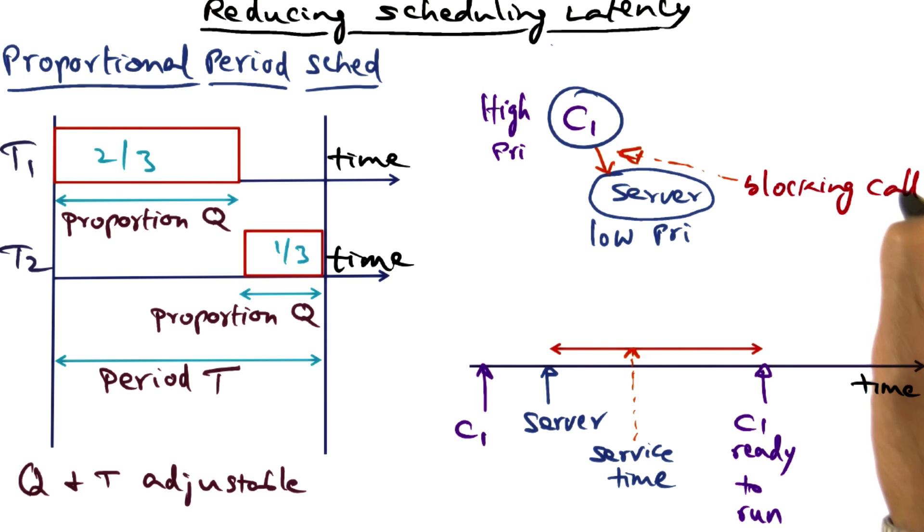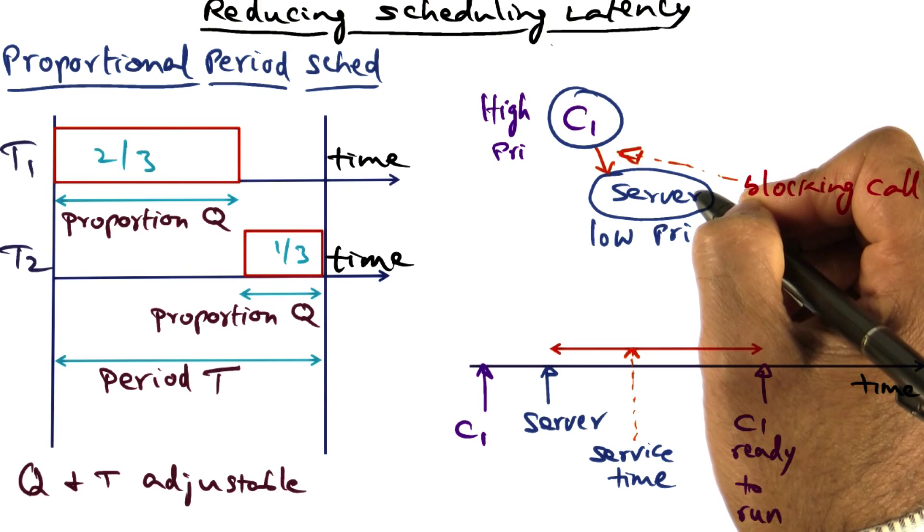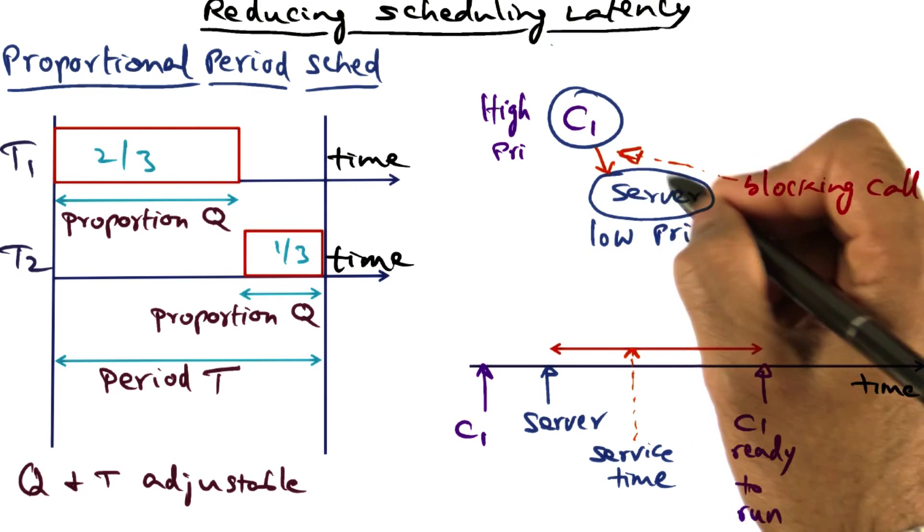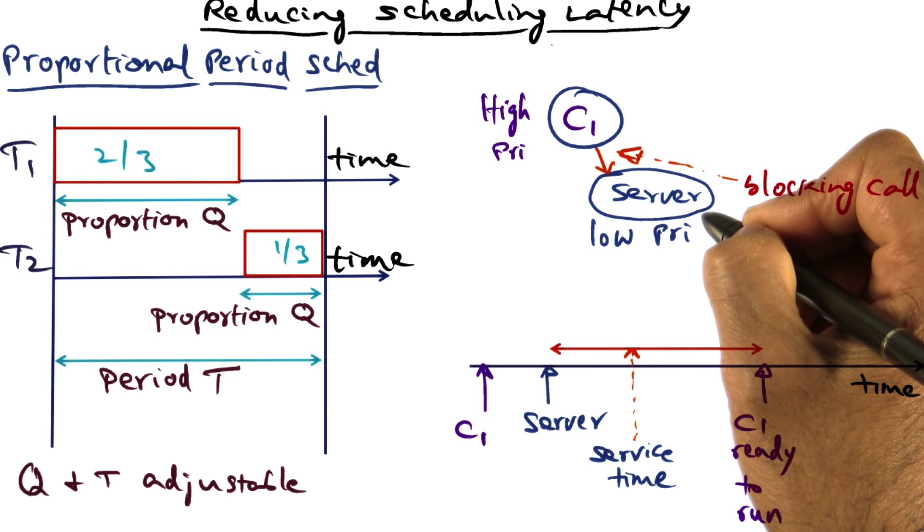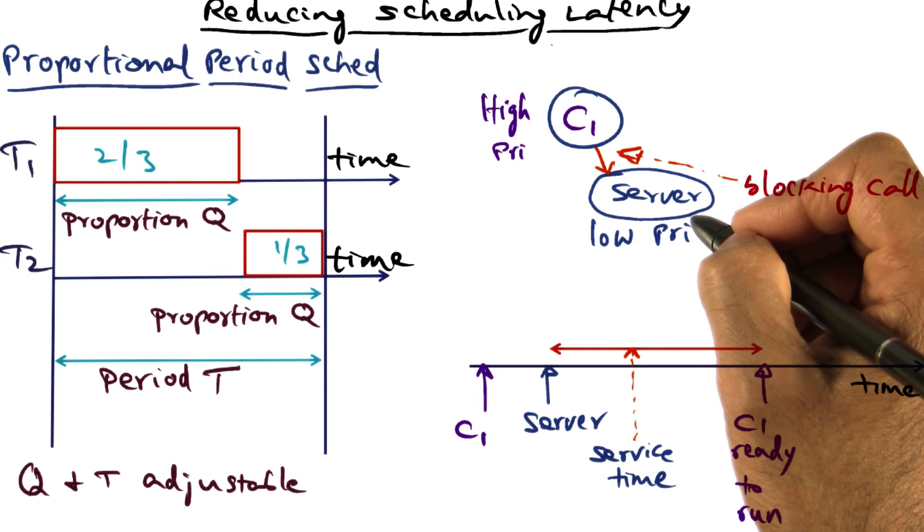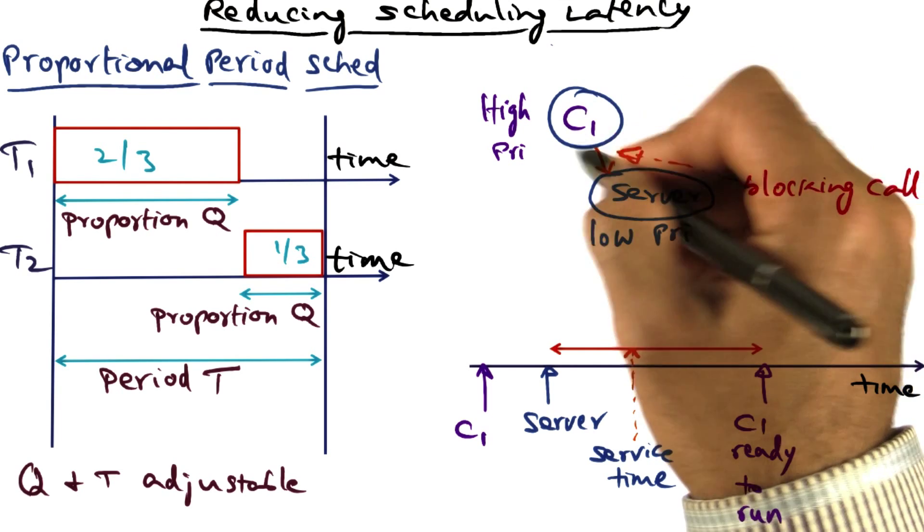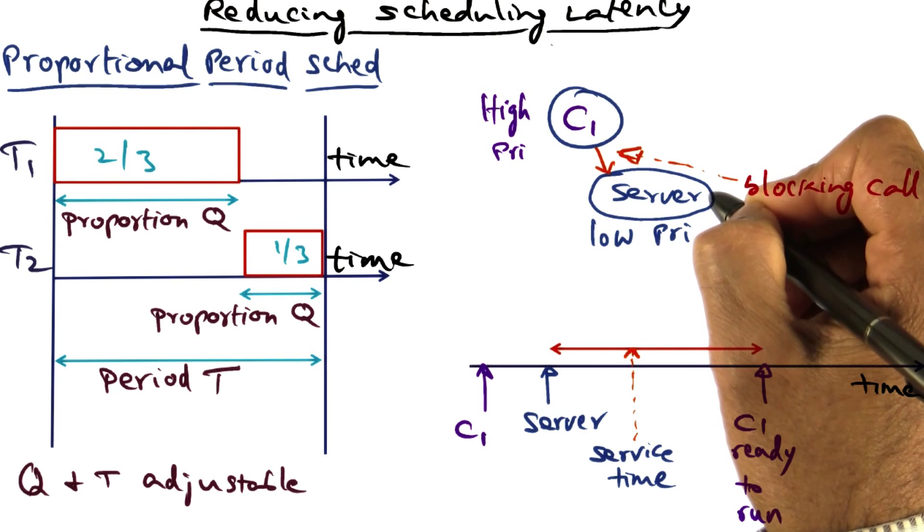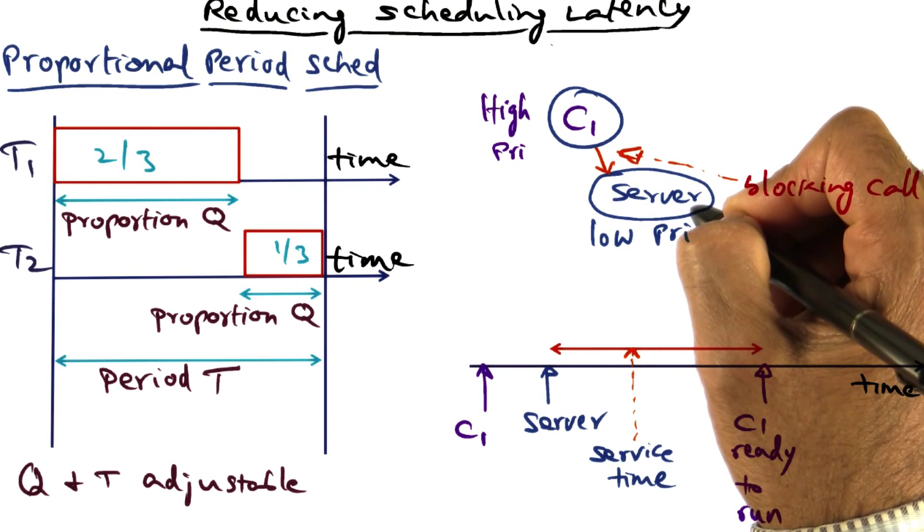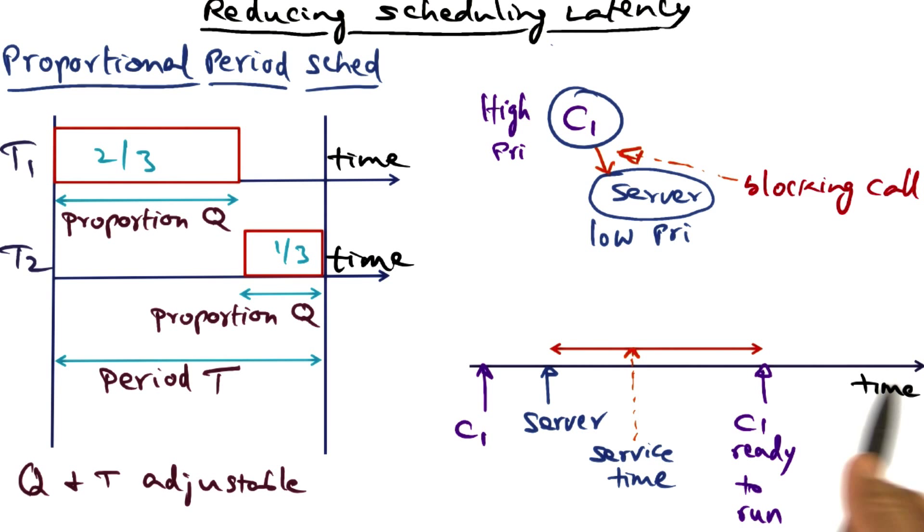And the server itself may be lower priority—it's a low priority server. For example, this client may contact a window manager to say I need a portion of the window and this is what I want you to do in terms of painting a portion of the window. That might be a call that a high priority task is making to a low priority server. And this is a blocking call, and until the server is done with its work, this high priority task cannot continue its execution. So if you look at the timeline: